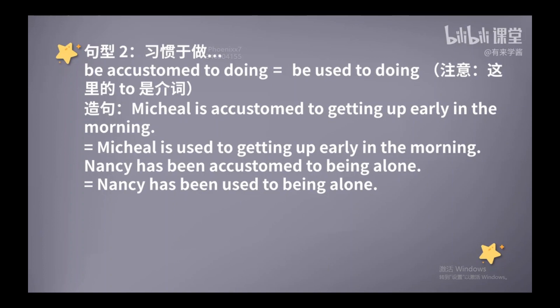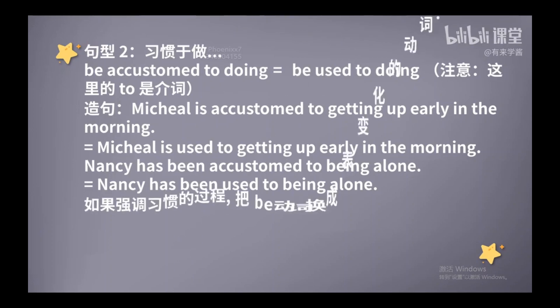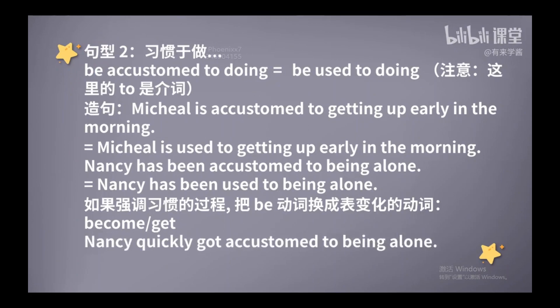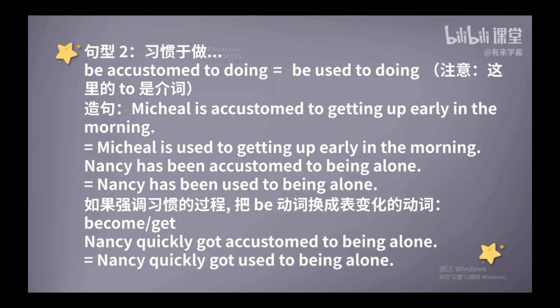那么要提醒大家的是，如果我们要强调习惯的过程的话，那么就需要把be动词换成表示变化的动词，比如说become或者说get。如果你的朋友Nancy被调到了一个特别偏远的地方工作，他必须要一个人生活，但是他很快就习惯了独处。我们可以这样来表达：Nancy quickly got accustomed to being alone. We can also say: Nancy quickly got used to being alone.